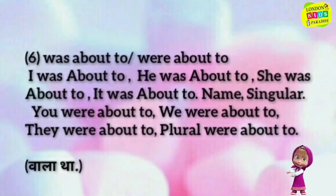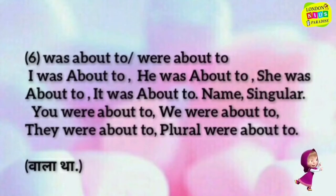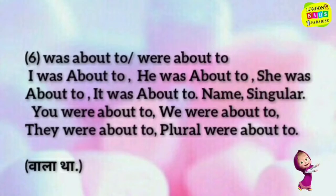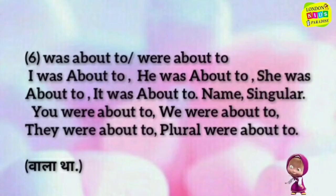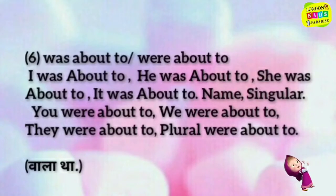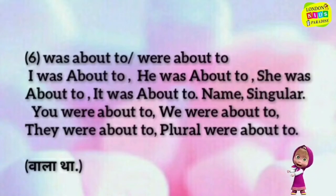He was about to. She was about to. It was about to. Name, singular. You were about to. We were about to. They were about to (plural) — were about to, wala tha.